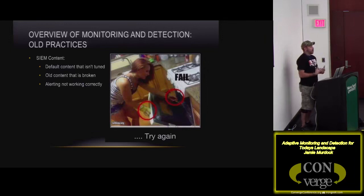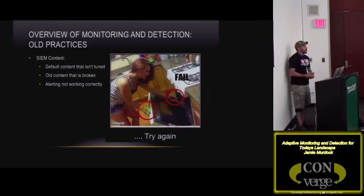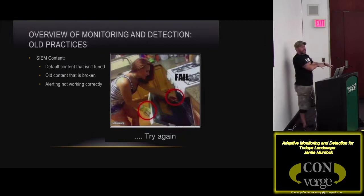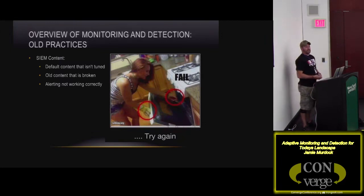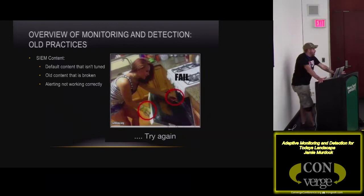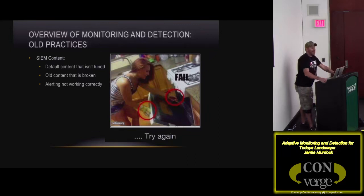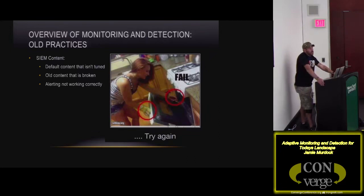The other one is alerting that's not reporting correctly. Let's say I want to make sure that I get an alert off of X, Y, and Z — or just any kind of flashy alert. Have you tested it to make sure it works? You can create content all day long and say, 'I want to be alerted anytime Jason Street walks in the building.' Well, if Jason doesn't walk into the building, how do you know it's going to work? You've got to make sure that alerting is working.